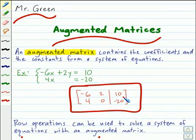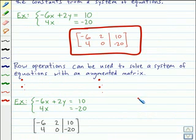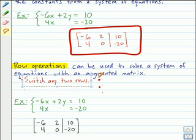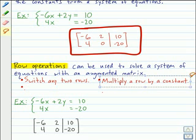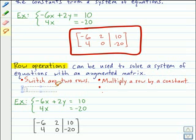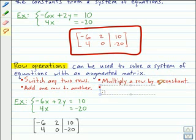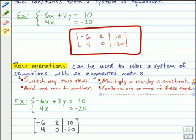Now, to solve a system of equations with an augmented matrix, we can use what are called row operations. There are four of them that we can use. We can switch any two rows, multiply a row by a constant, add one row to another, or we can combine one or more of these steps.